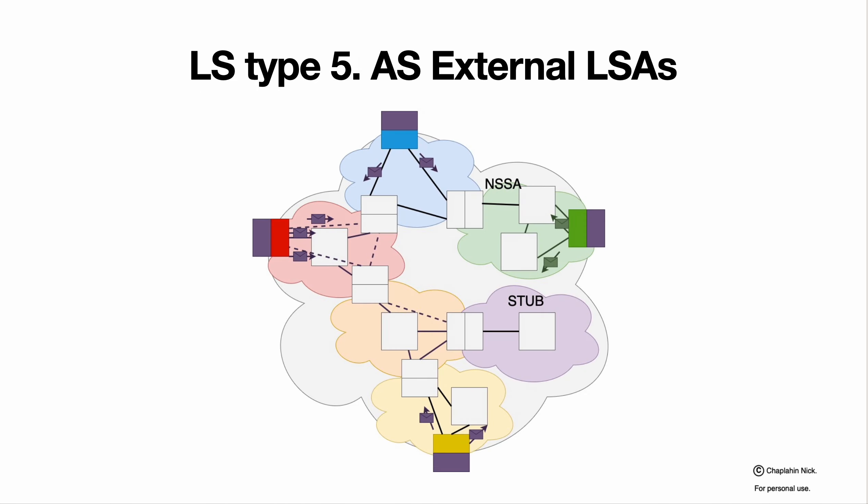Next, LSAs type 5, Autonomous system external LSAs. Since this is called external, some people could think that they go external. No, they go internal. This is traffic that is generated inside the autonomous system by autonomous system border routers to notify about possible external routes. And those packets are being flooded through all the areas to all the devices except STUB area.